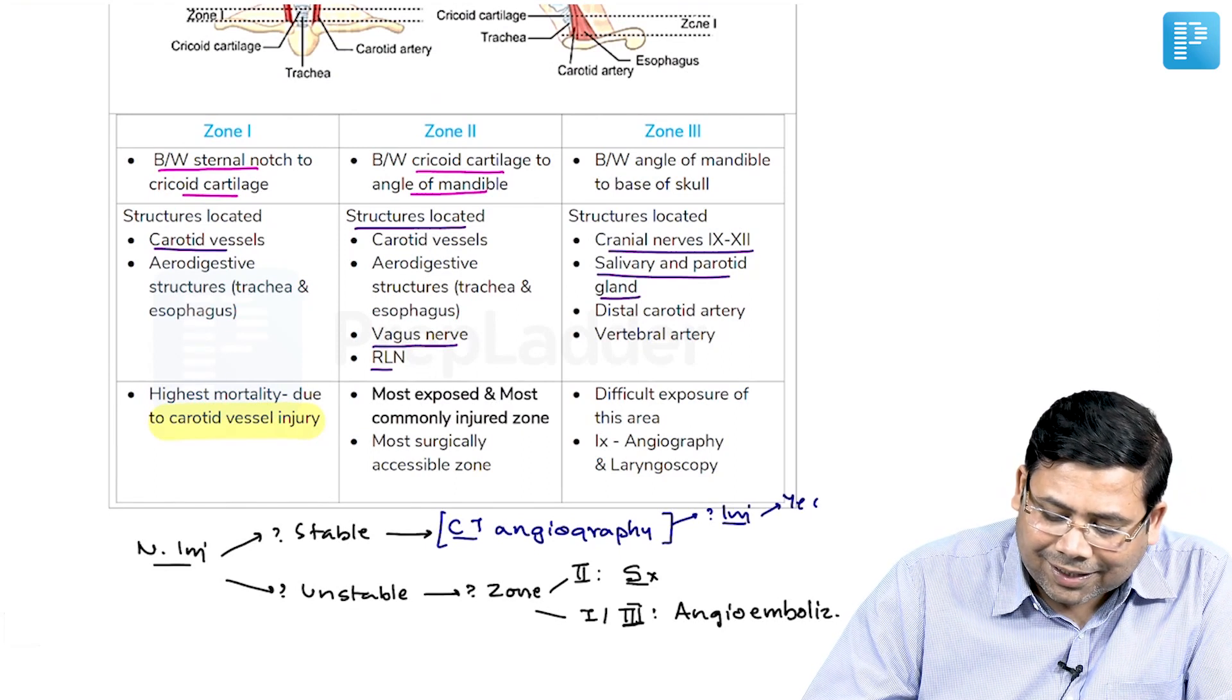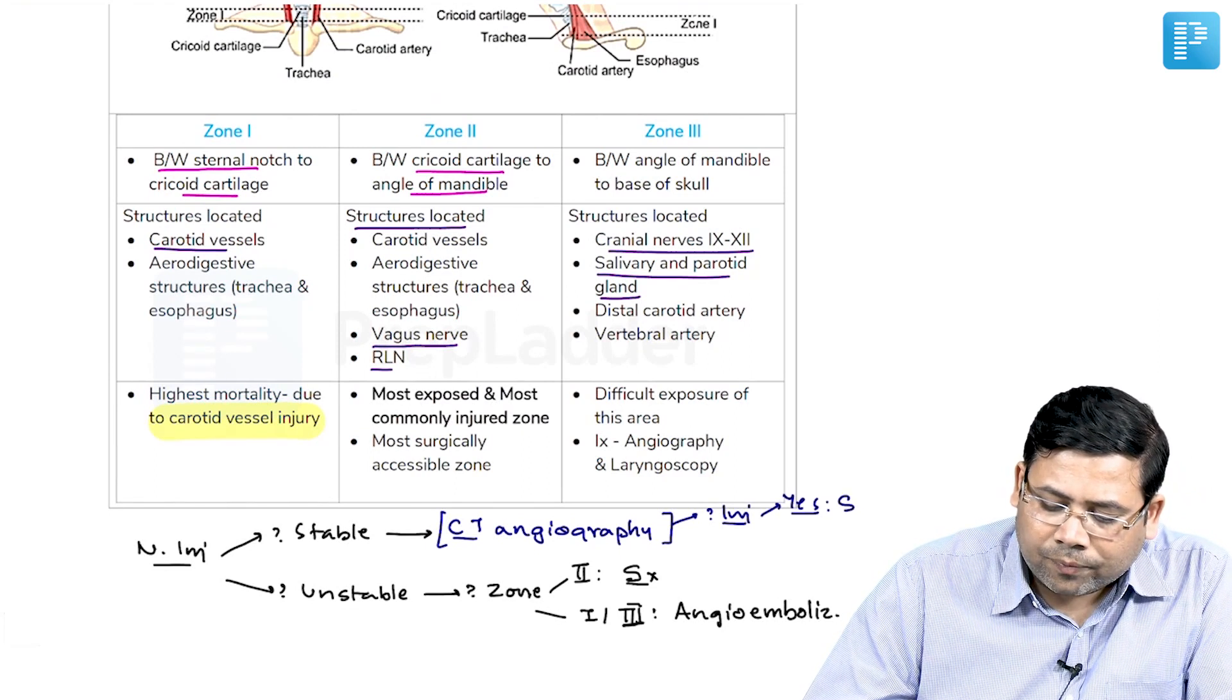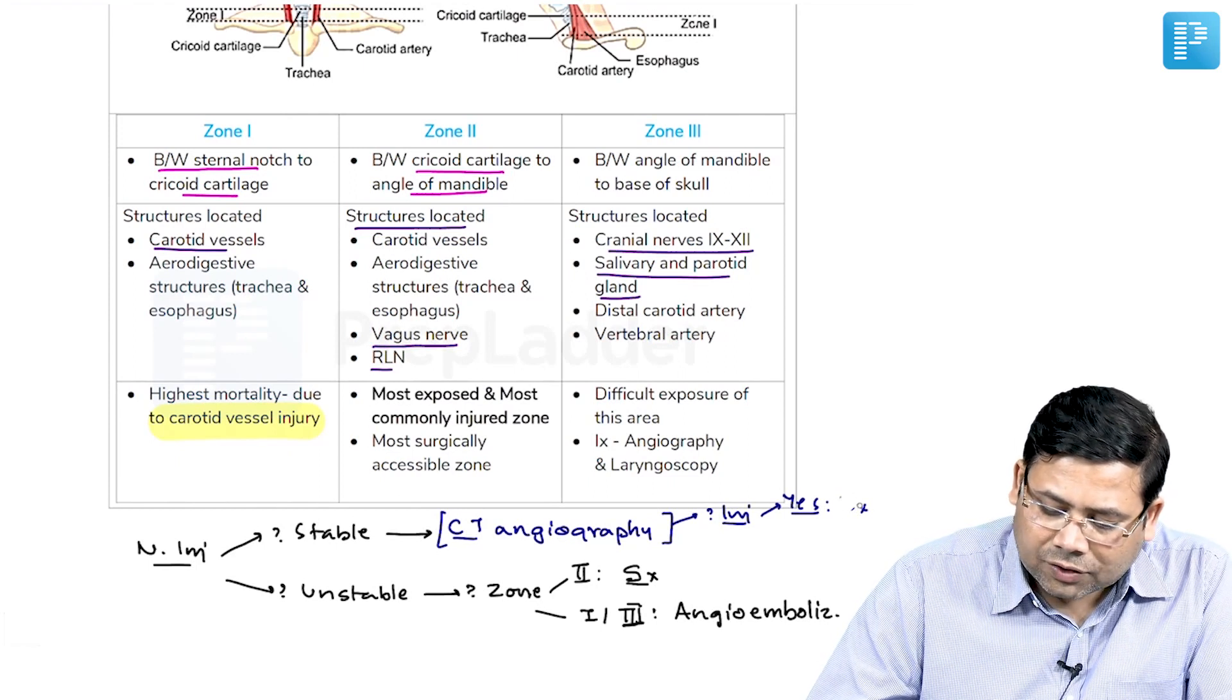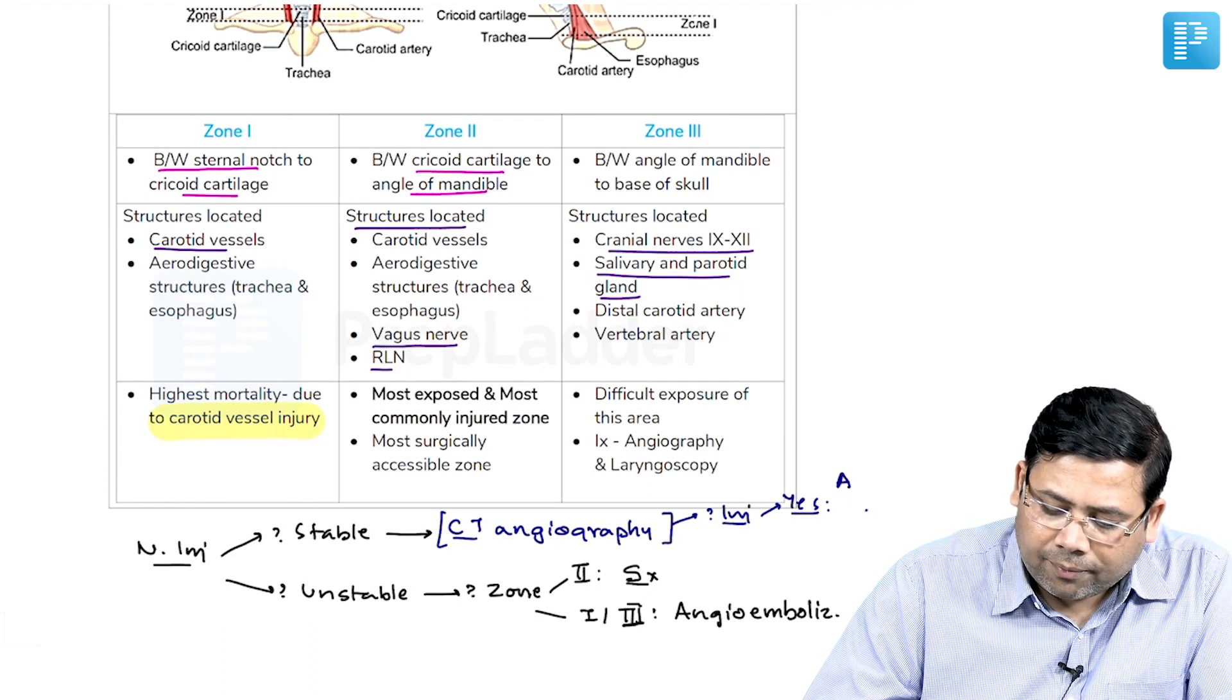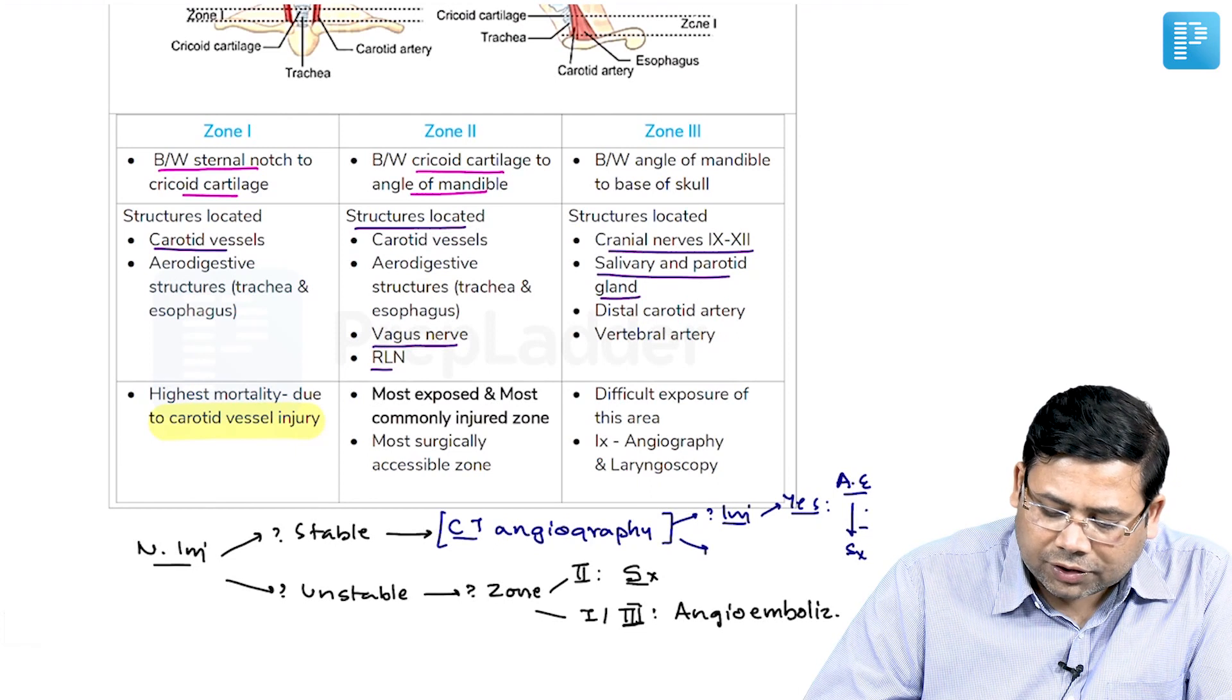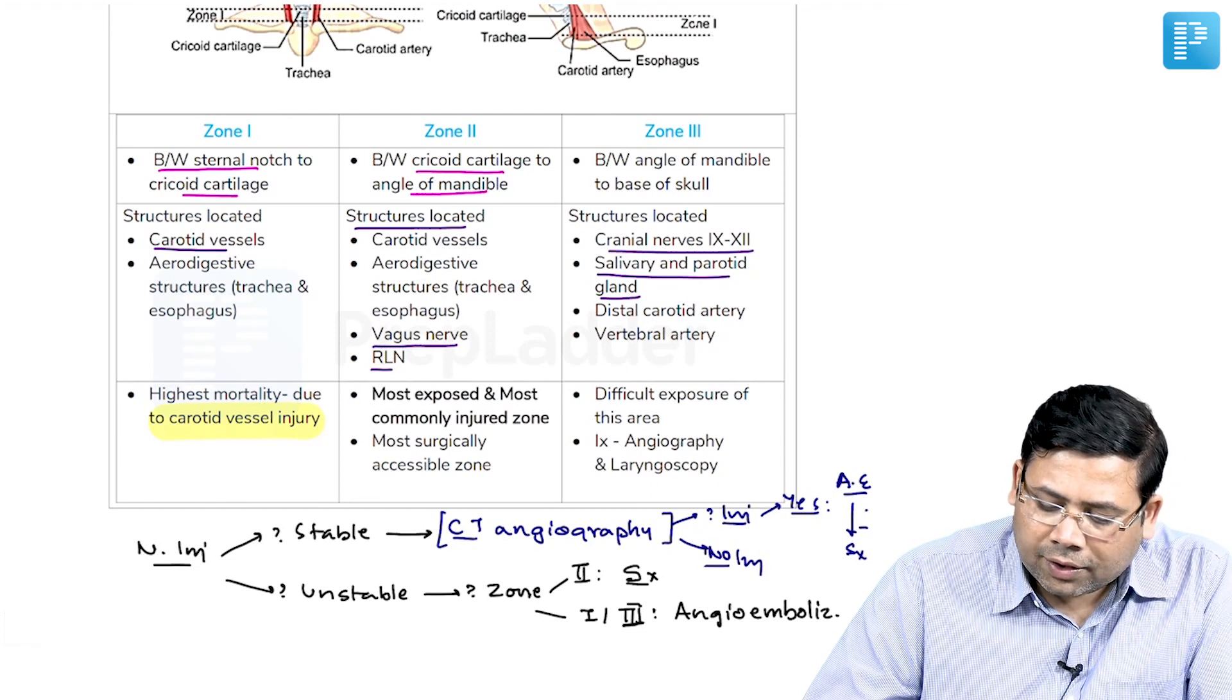So if the injury is there, yes, you will go for surgery. But before that, always remember, in this case also, the first priority is given to angioembolization. If it fails, then surgical exploration. If there is no injury, then yes, continue with the observation.